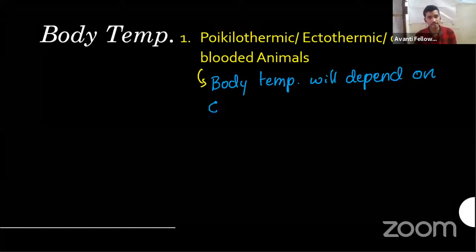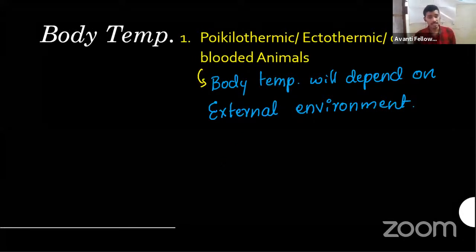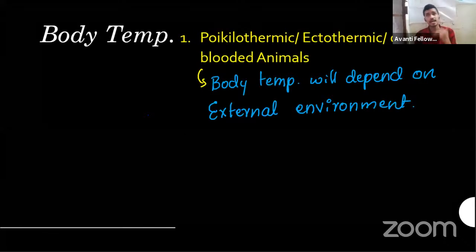Cold-blooded animals' body temperature depends on the external environment. When the outside temperature increases, their body temperature also increases; when it decreases, their body temperature decreases. They are dependent on the environment for maintaining their body temperature — they cannot regulate it themselves.